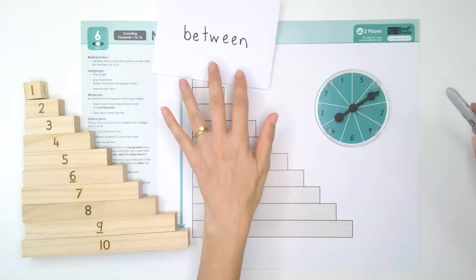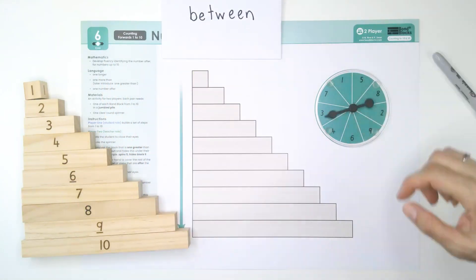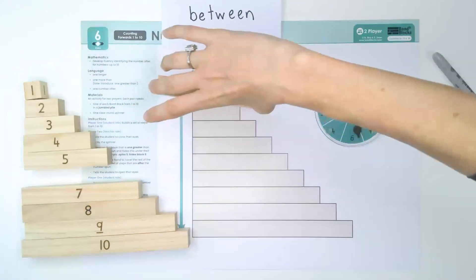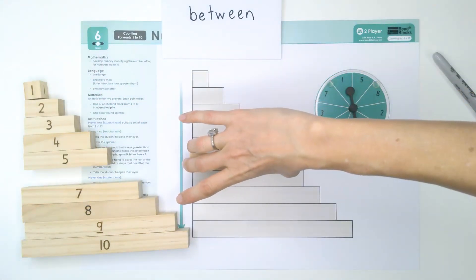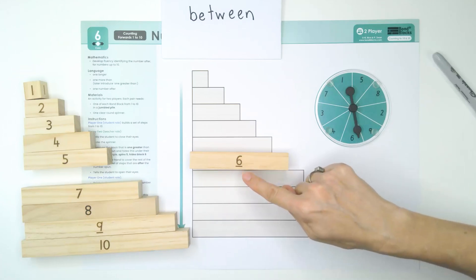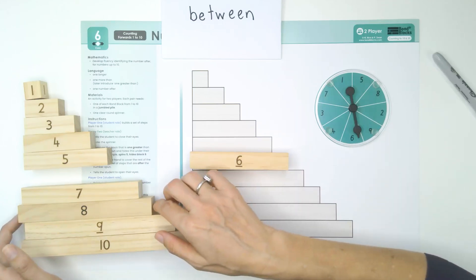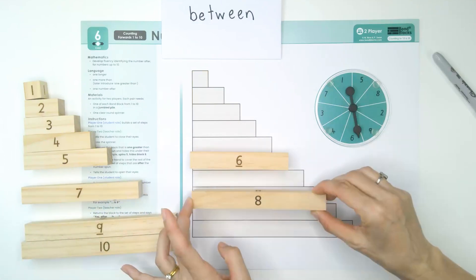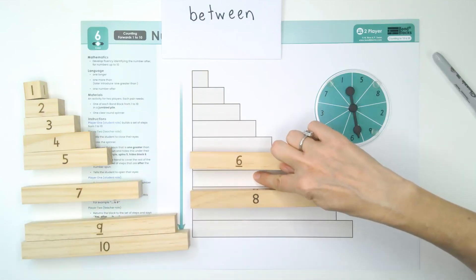When we spin, I will place the block that I've spun, looking approximately where it fits about here. Now, I'm not going to place the block that's straight after. I'm going to place the block that's actually not one more, but two more. And this leaves a space here, which is between.